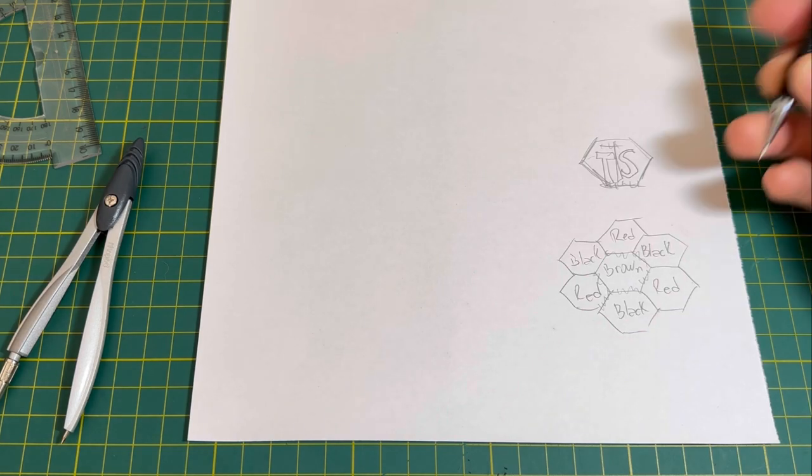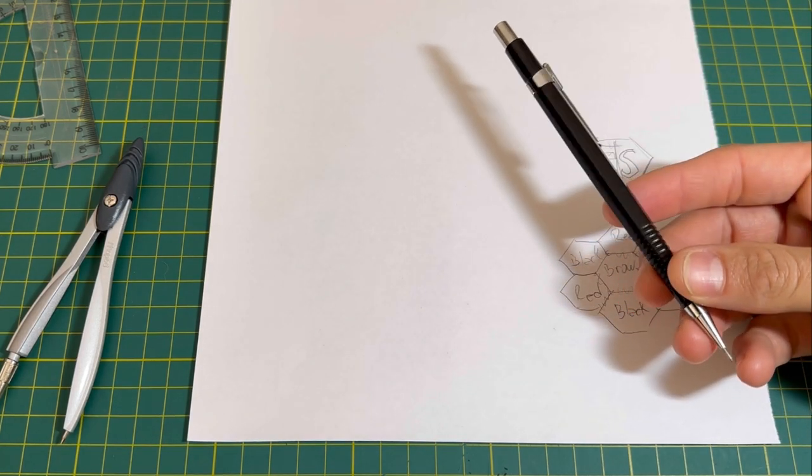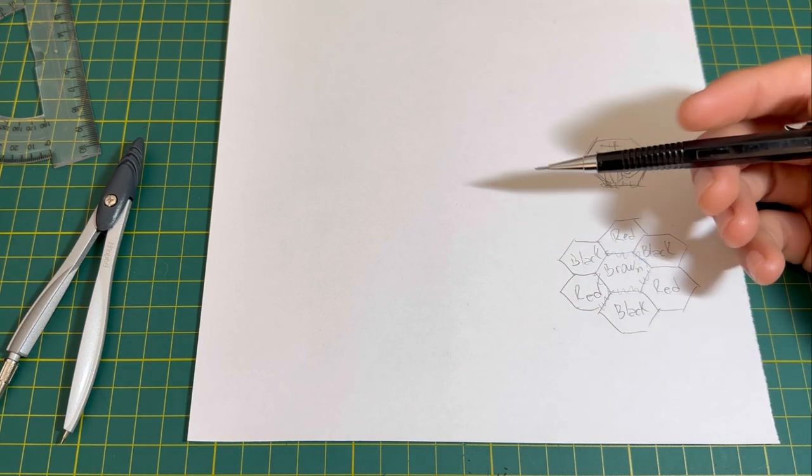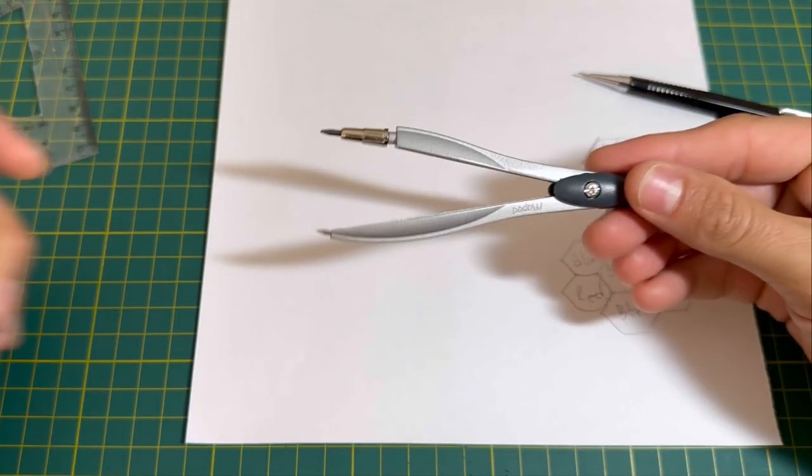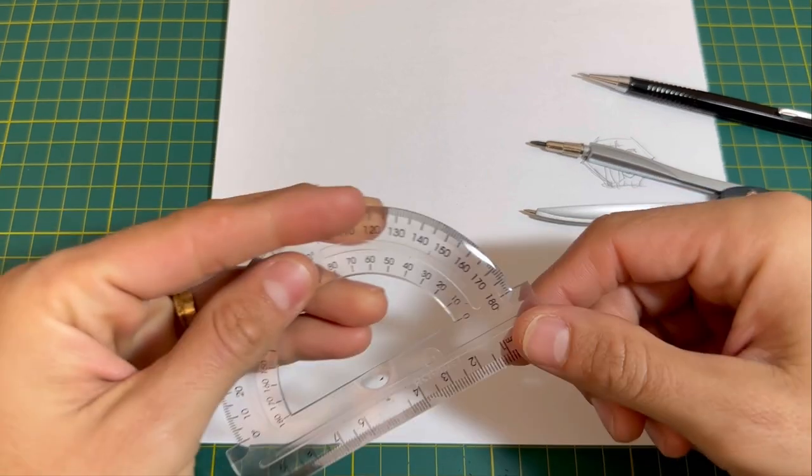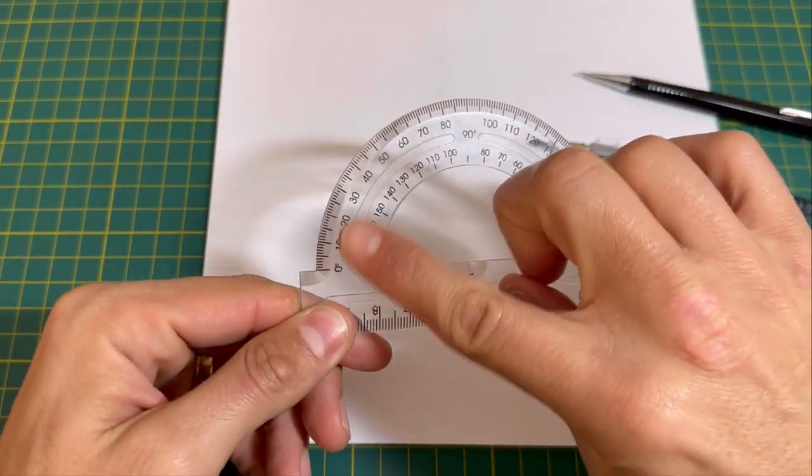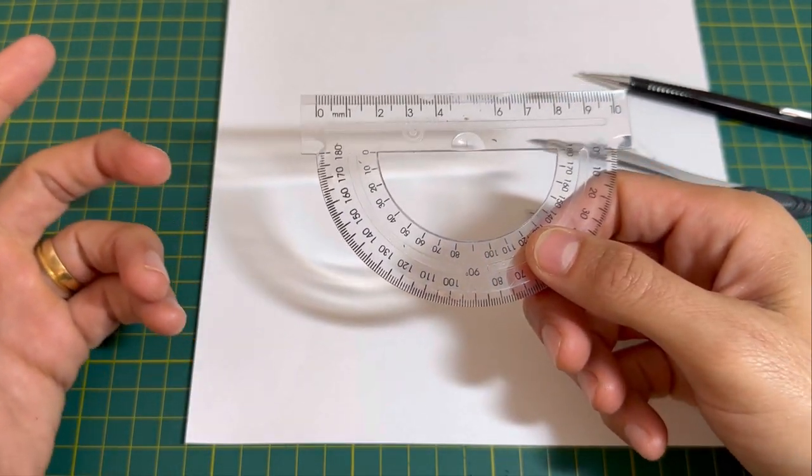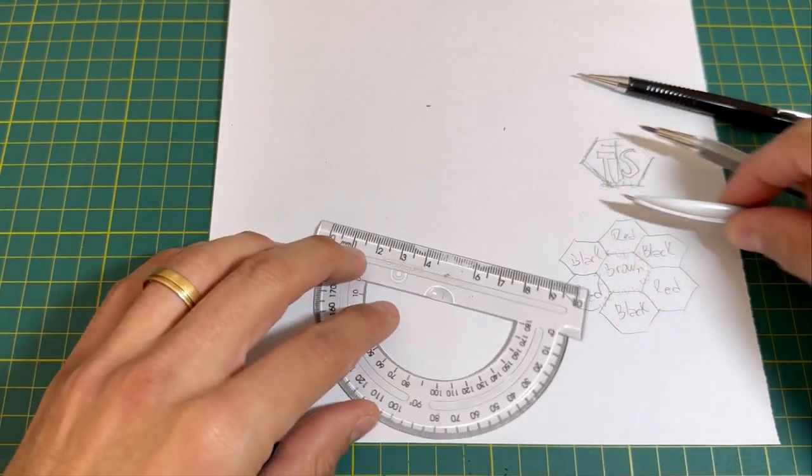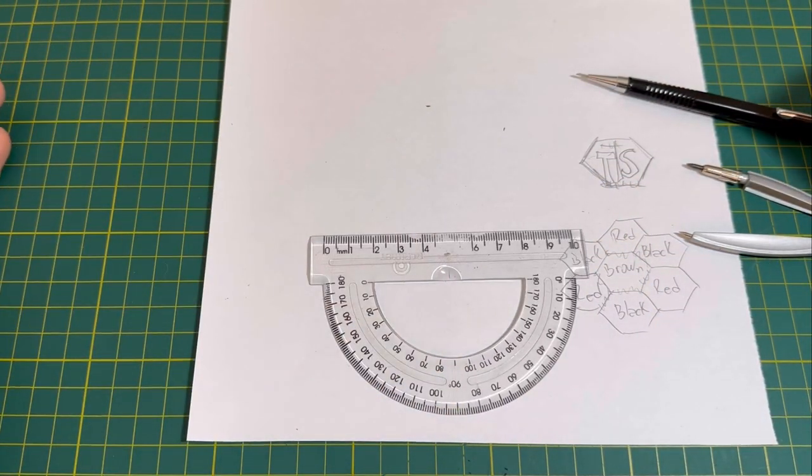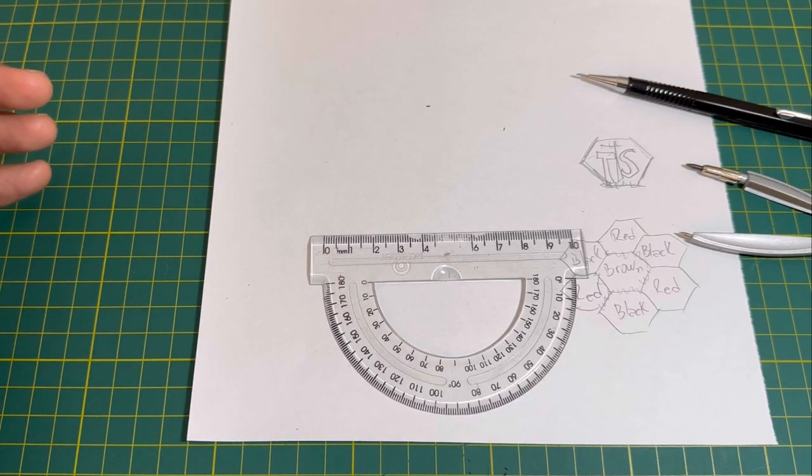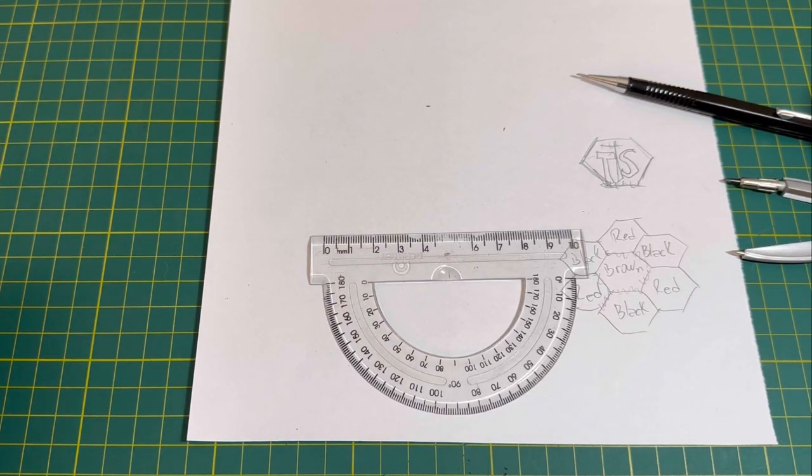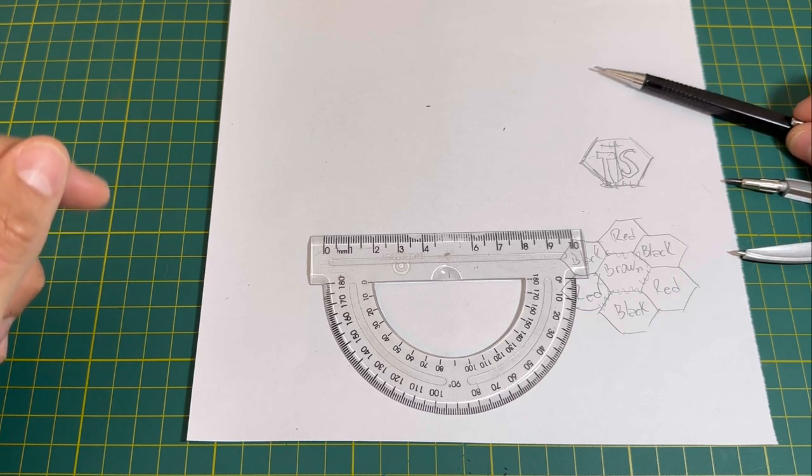What you're going to need is something to draw with. In my case, I'm going to use this mechanical pencil, a compass, and a straight edge. I'm not going to use the protractor, I'm just using it for the straight edge because this is the smallest one I've got.